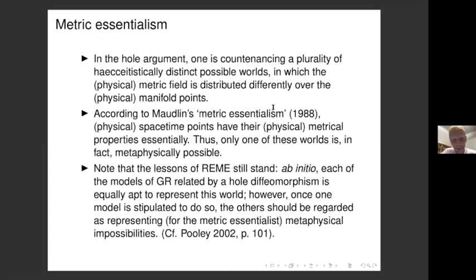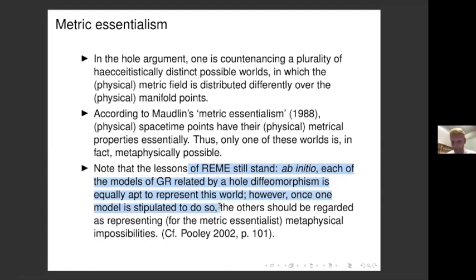Norton says in response: I have this menu of models, so I face an epistemological challenge — which model actually represents the metaphysically possible world? How do I distinguish the right model from the impostors? But Pooley says this rests on a misunderstanding of how modeling works. At the outset, each model related by a hole diffeomorphism is equally apt to represent the metaphysically possible world, but once I've stipulated that one model represents it, the others should be regarded as representing metaphysical impossibilities — if you're a metrical essentialist.